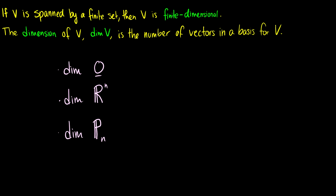Welcome back to linear algebra. In this video we'll introduce the concept of dimension. If a vector space V is spanned by a finite set, we're going to call V finite dimensional. The dimension of V, which we'll shorten to dim V, is the number of vectors in a basis for V.